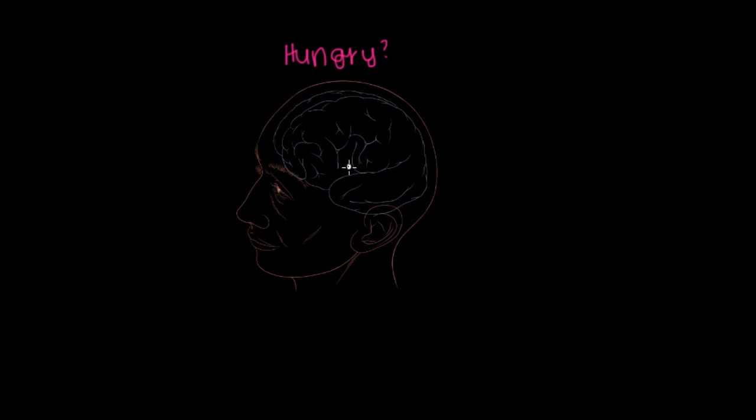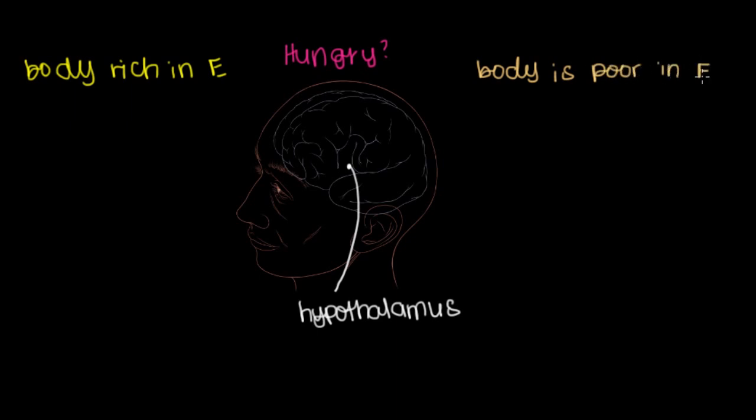The part of your brain that determines whether you're hungry or not is called the hypothalamus. Your hypothalamus helps make the distinction if your body is rich in energy or if your body is poor in energy. Or in other words, are you hungry or are you full?